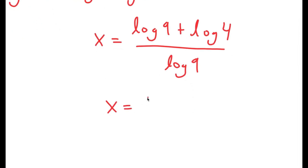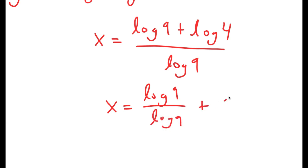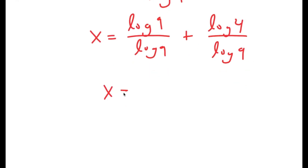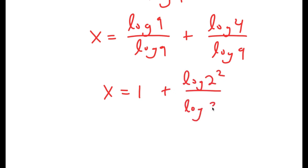Now this is equal to log 9 over log 9, plus log 4 over log 9, which is equal to 1 plus log of 2 squared over log of 3 squared.